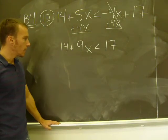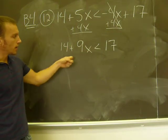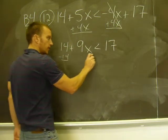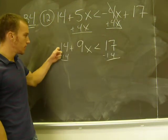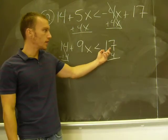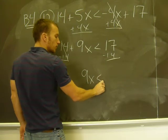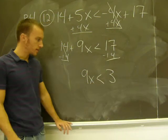My next step - remember, the goal is to get x by itself, so I've got to get rid of the 14 by subtracting because it's positive. So I subtract 14 from both sides. 14 minus 14 is 0, so it's gone. And over here, 17 minus 14 is 3. So my inequality is now 9x is less than 3.